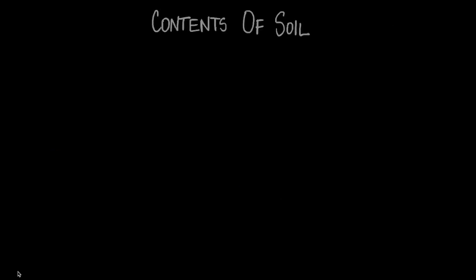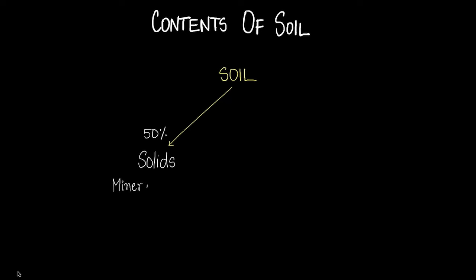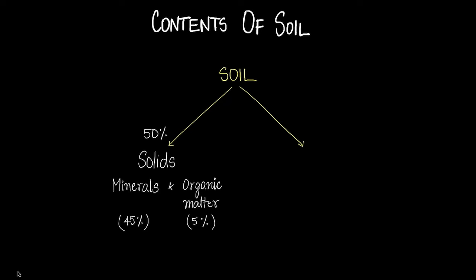The contents of soil are basically like this: 50% of soil is solid, and the solids are split up into two parts — minerals and organic matter. 45% is minerals and 5% is organic matter. The remaining 50% is liquids and gases — that's just air and water.